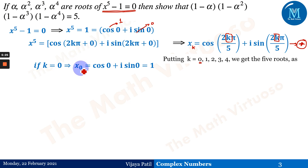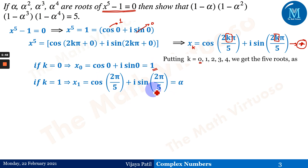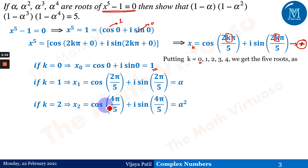x₀ = cos 0 + i sin 0 = 1. Then k = 1 gives x₁ = cos(2π/5) + i sin(2π/5), which we call α. Then k = 2 gives cos(4π/5) + i sin(4π/5), which can be expressed as α². This is because cos(2π/5) = e^(2πi/5), so cos(4π/5) = e^(4πi/5) = (e^(2πi/5))² = α².